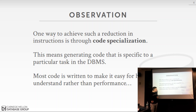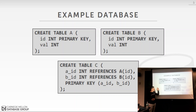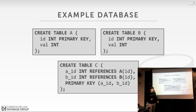I'm going to go through a bunch of examples during this lecture using a really simple database that comes from the HyPer paper. It's a three-table database: A, B, and C. A and B have integer primary keys and a value, and C has foreign key references to both A and B. The first thing we need to talk about is how to actually process a query.